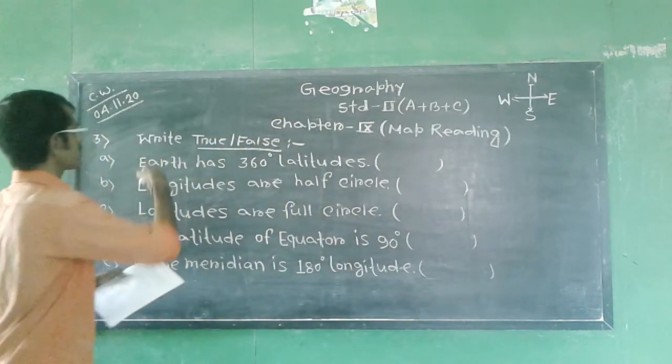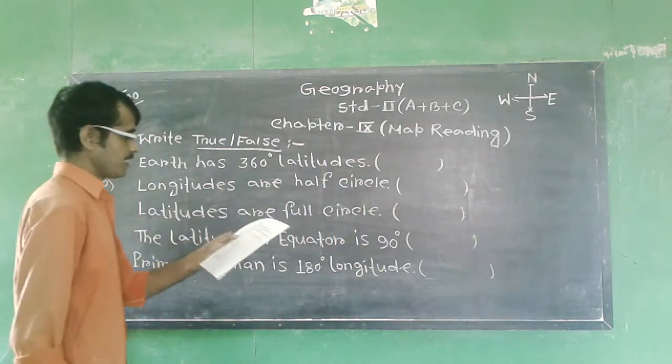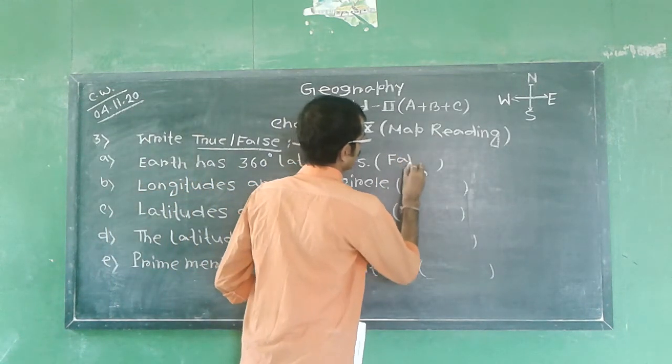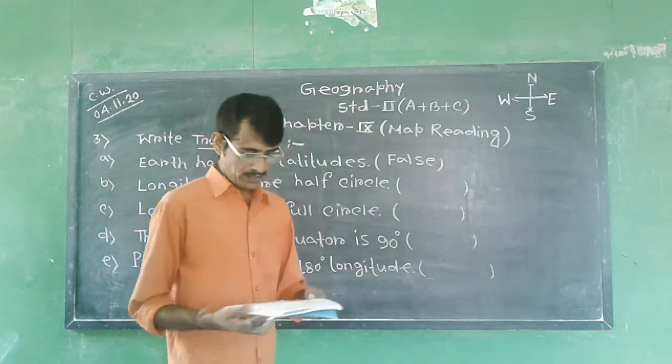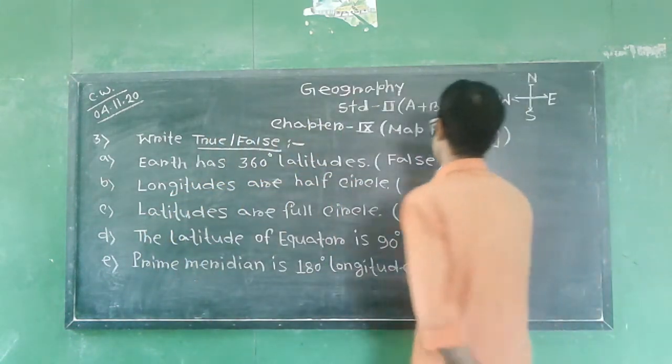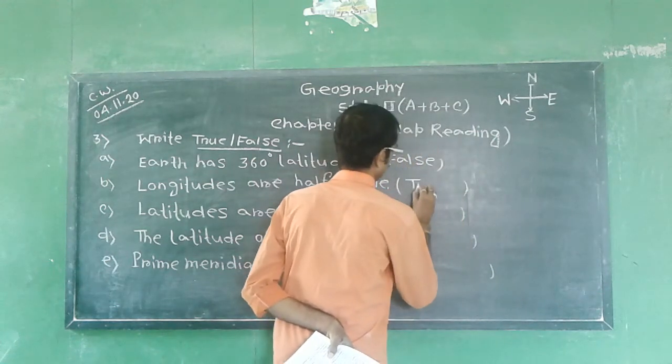Let me review. Earth has 360 degree latitudes - it's a false statement. After that, longitudes are half circle. Yes, that's a true statement.